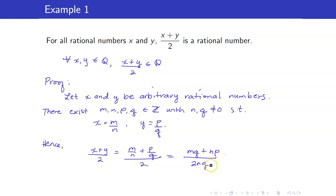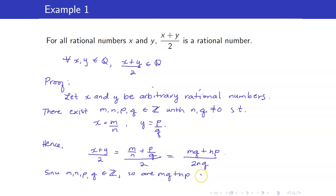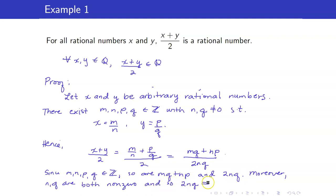Take note that for a number to be rational, it has to be a ratio of two integers and the denominator should be non-zero. Since m, n, p, and q are integers, so are mq + np and 2nq. Moreover, n and q are both non-zero, so the denominator 2nq is not equal to zero. Therefore, (x + y)/2 is a rational number. That concludes our proof.